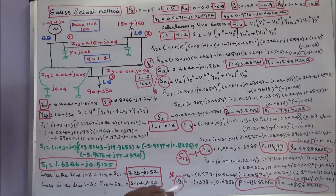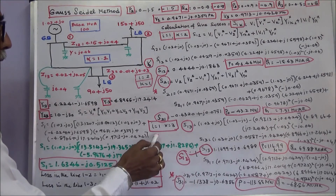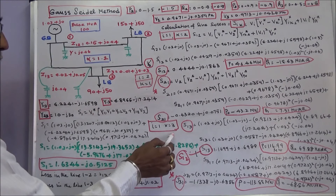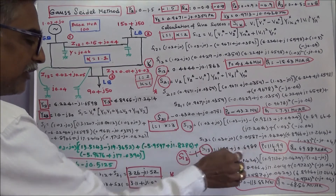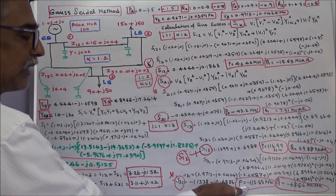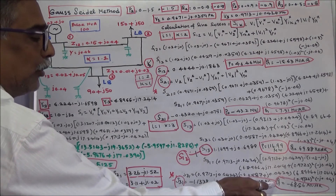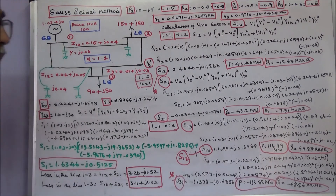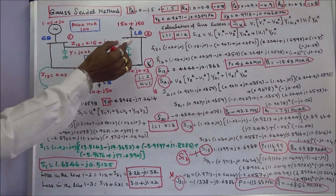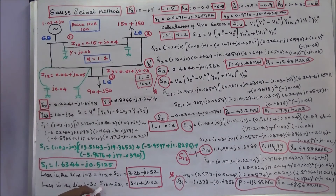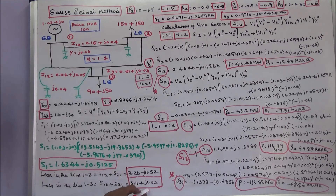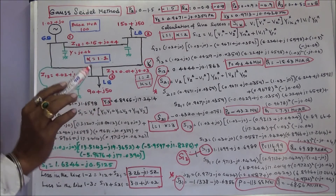For S31 (I=3, K=1): P = minus 113.88 MW, Q = minus 68.86 MVAR. The loss in line 1-3 is S13 + S31: real power loss = 3.11 MW, reactive power loss = 1.02 MVAR.